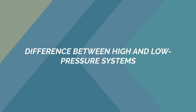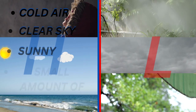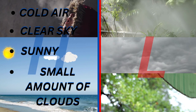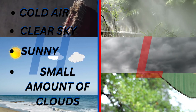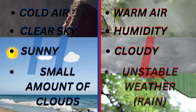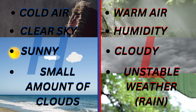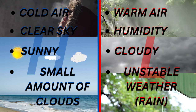Most often during high pressure, it will be cold air, clear sky, sunny, with a small amount of clouds. During low pressure, expect warm air, humidity, cloudy skies, unstable weather, and rain.